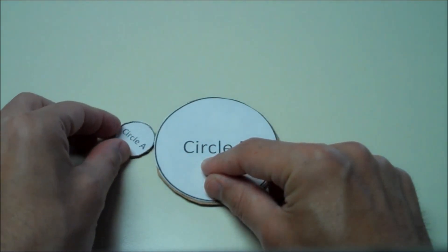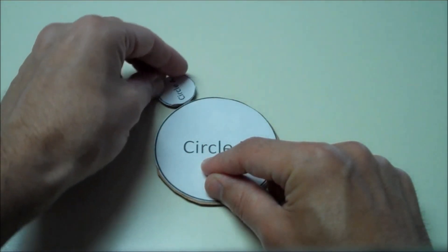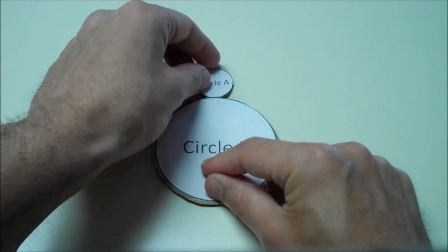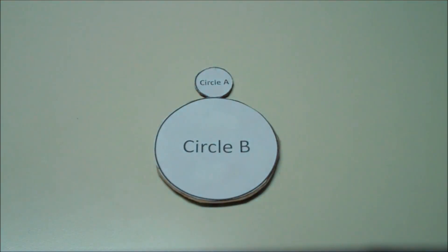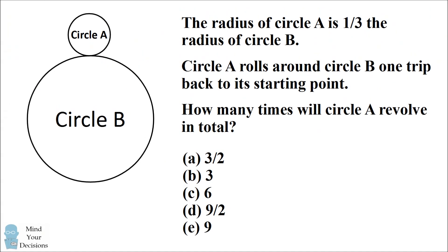And when we complete the trip, as circle A rolls around circle B, when it completes the trip, this will be a fourth time that circle A has rolled around. So the correct answer is four.